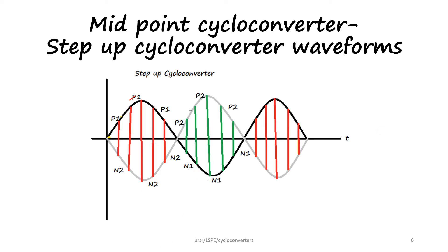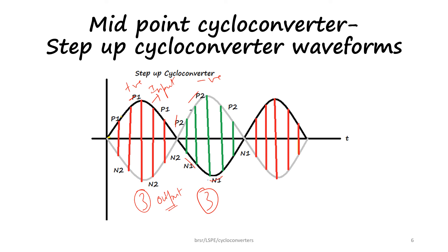In the negative half cycle, P2 and N1 are switched alternatively, just as P1 and N2 were switched in the positive half cycle. In the positive half cycle P1, N2 is turned on three times, and similarly in the negative half cycle P2, N1 is turned on three times. So in one complete cycle of the input voltage we have three output cycles in the positive half and three in the negative half, giving 6 output cycles total. By switching at a different rate, the required output frequency can be obtained.